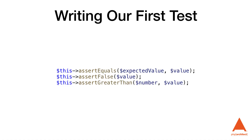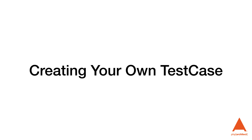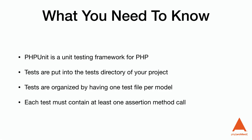PHPUnit ships with a lot of assertion methods, and it seems like every release adds more. Assertion methods start with 'assert' and then detail what they're asserting. If the value sent to the assertion doesn't match the expected value, the test will be marked as failed and you'll get a listing of all failed tests in the output. One of the best pieces of advice for structuring test code is to create a custom test case class for each package you're developing — this allows you to create helper functions for common setup code and define your own assertion methods.